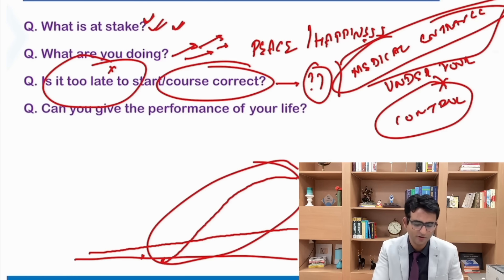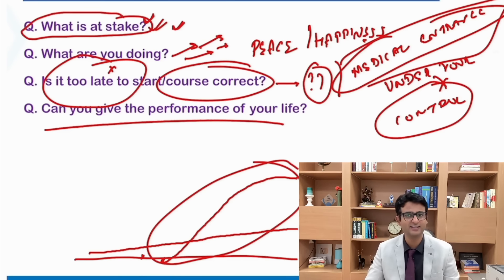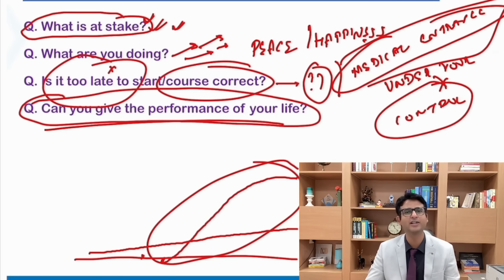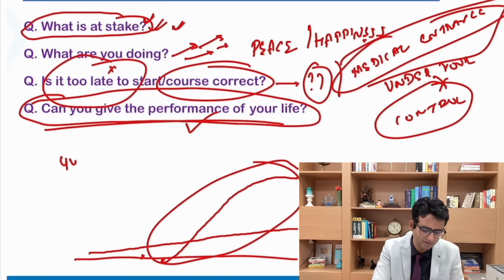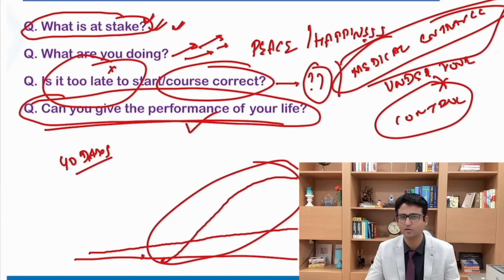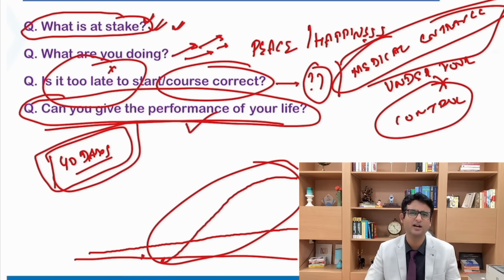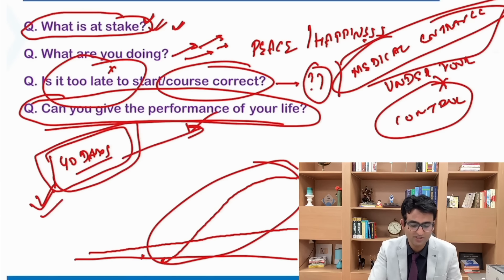This is a very important thing. We have already established that at stake is something huge, something which is going to impact the rest of your life. If the stakes are so high, shouldn't you be doing something that you have never done before in your life? Are you ready to give the performance of your life? I often repeat my story. I got just 40 days to appear for my PG entrance examination. Why do I keep repeating about it? Because those 40 days were the best performance of my life.